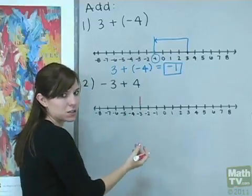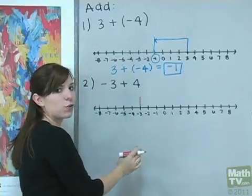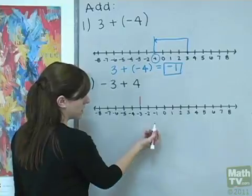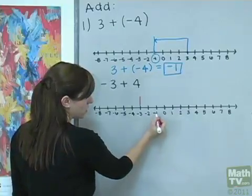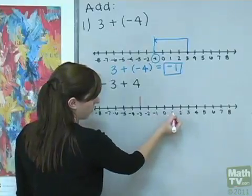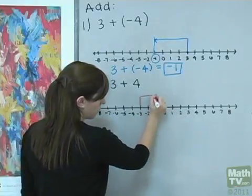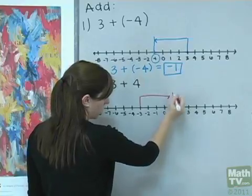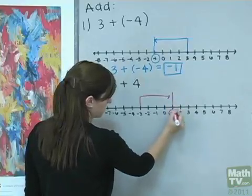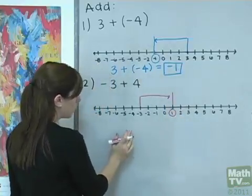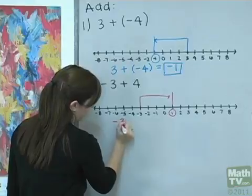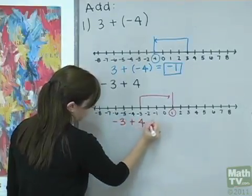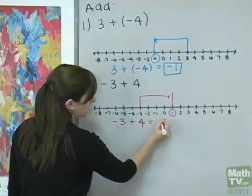Now we're adding 4 spaces, which means we're going to move 4 spaces to the right because it's positive. So counting over 4: 1, 2, 3, 4 — ending at 1. We know then that negative 3 plus 4 equals 1.